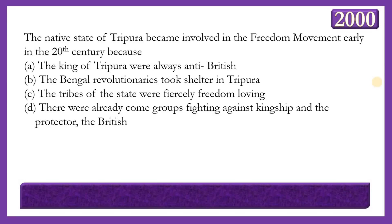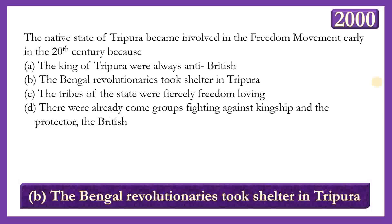Next question: The natives of Tripura became involved in the freedom movement early in the 20th century because of? Options: The king of Tripura was always anti-British; Bengali revolutionaries took shelter in Tripura; the tribes were fiercely freedom-loving; or groups were already fighting against the British. The answer is option B — the Bengali revolutionaries took shelter in Tripura — and as a result, the native states of Tripura became involved in the freedom movement.